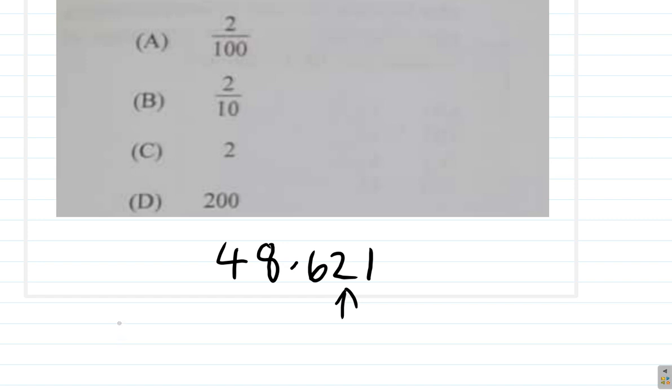Remember the way this is written. This is 40 plus 8 ones. It's 4 tens plus 8 ones plus 6 divided by 10 plus 2 divided by 100 plus 1 divided by 1000.